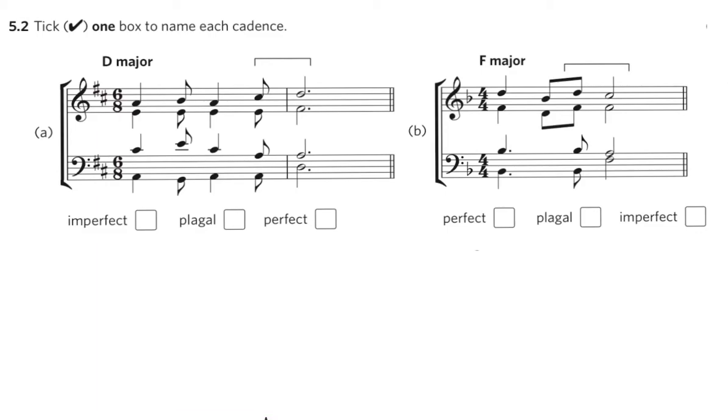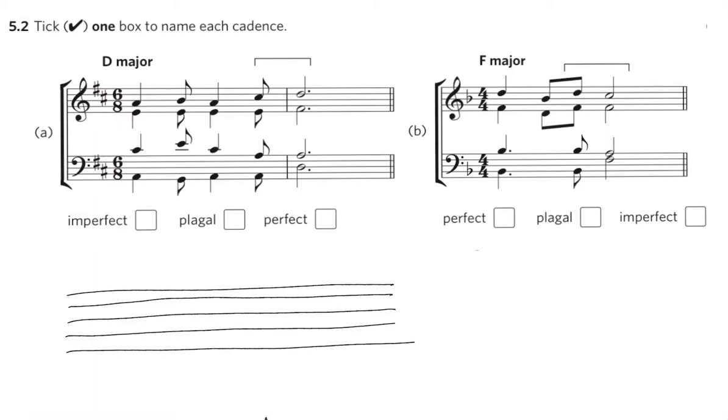Let's look at the first example in D major. The first thing to do is on a blank piece of paper draw a stave. Don't forget to put in the key signature.